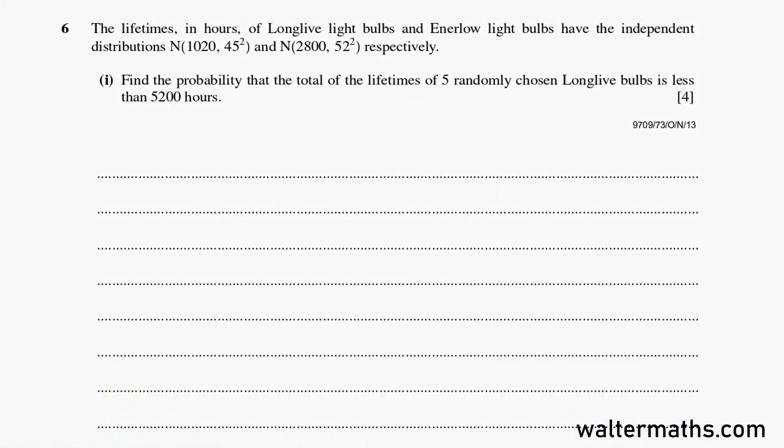Let's start with this question. The lifetimes in hours of long-lived light bulbs have the independent distributions normal of mean 1,020 and variance 45 squared and normal of mean 2,800 and variance 52 squared, respectively. Find the probability that the total of the lifetimes of 5 randomly chosen long-lived bulbs is less than 5,200 hours.